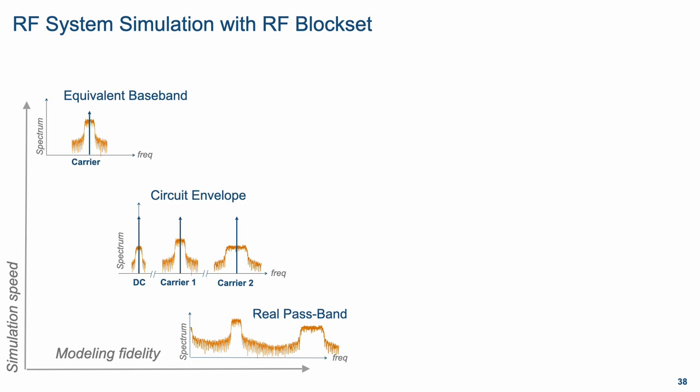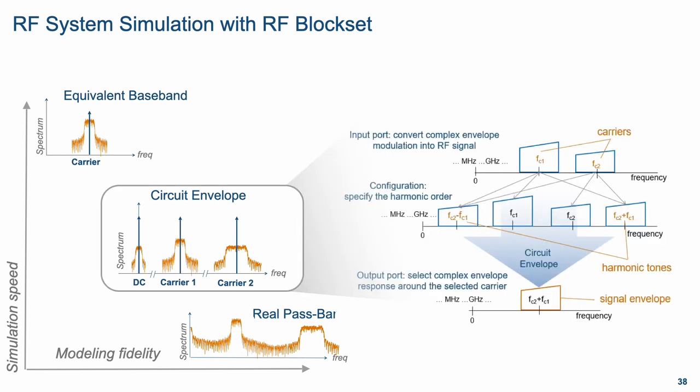For this we use the RF blockset, a MathWorks product that enables simulation of RF systems. The RF blockset supports circuit envelope, a simulation technology that has been around for a while. It enables multi-carrier simulation based on harmonic balance, and when applied at the system level with behavioral models, provides a trade-off between the equivalent baseband approach and the real passband approach. The equivalent baseband is faster but less accurate, not showing what happens outside the bandwidth of interest, while real passband is more accurate but enormously slower due to the very small simulation time step required.